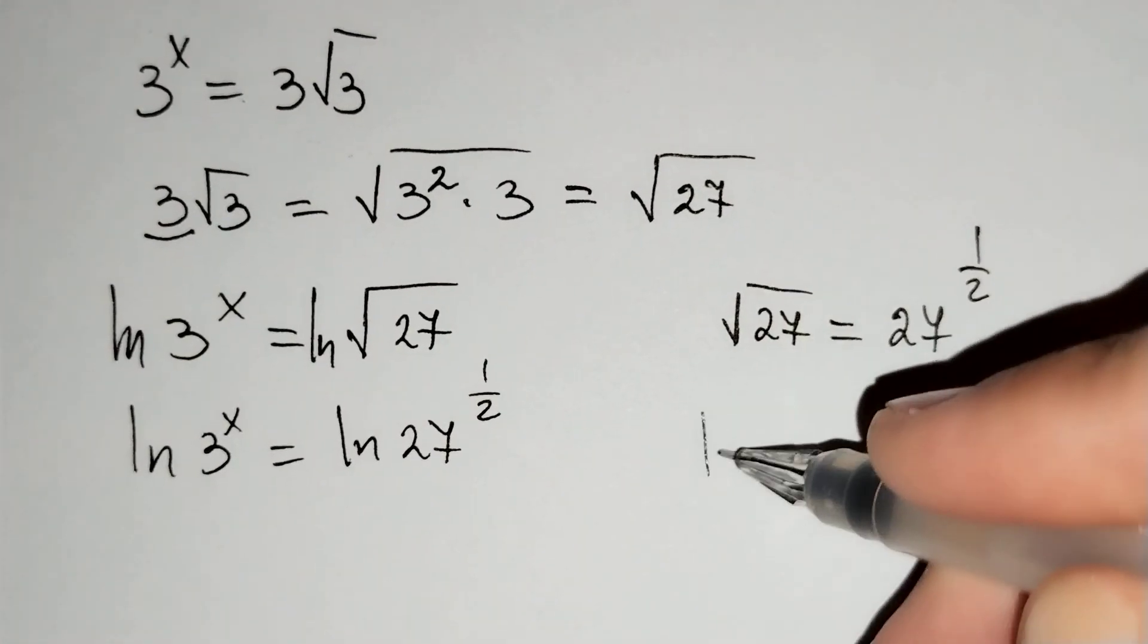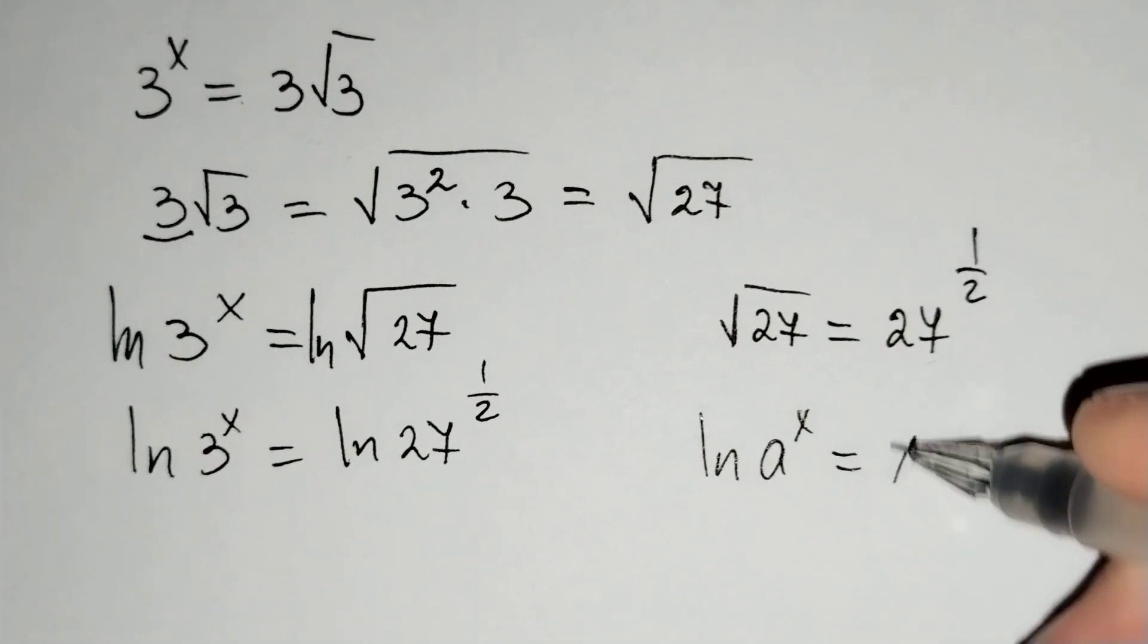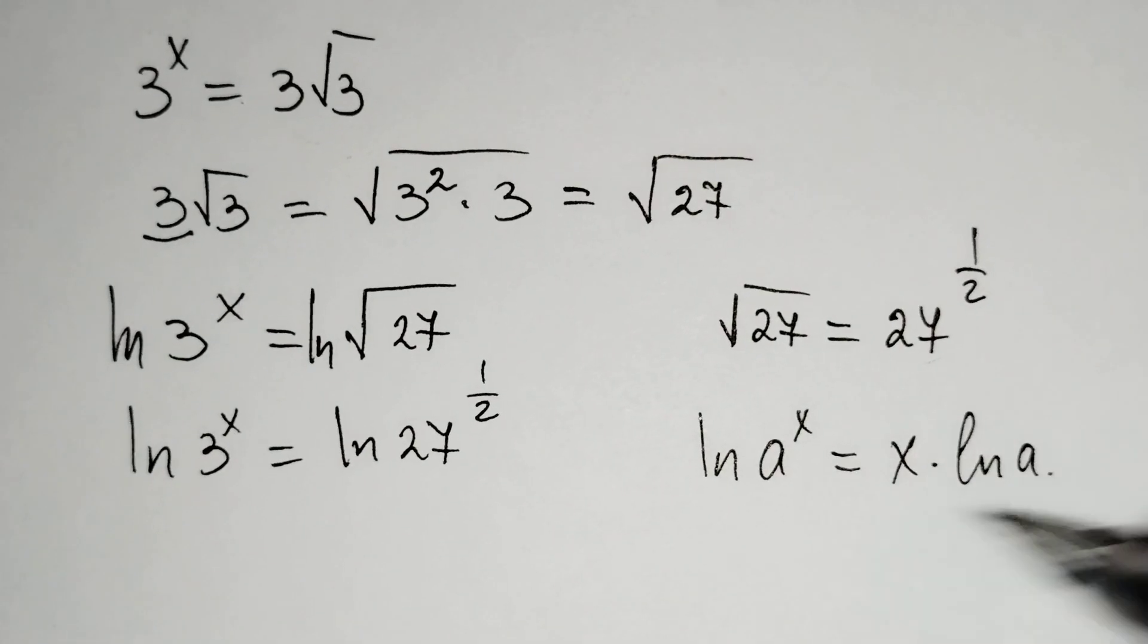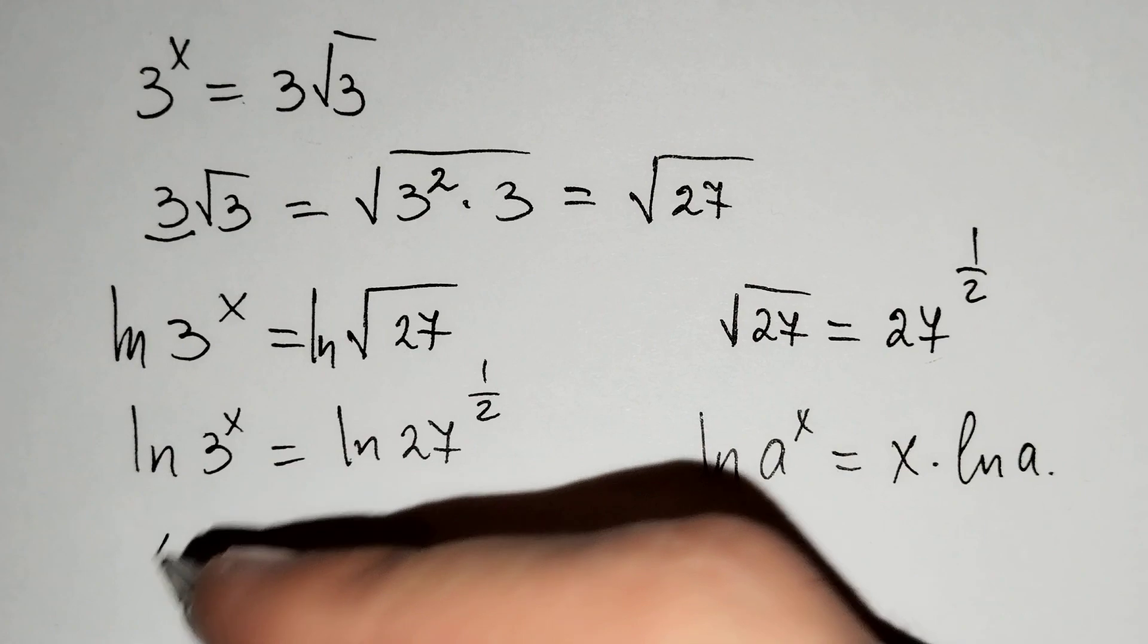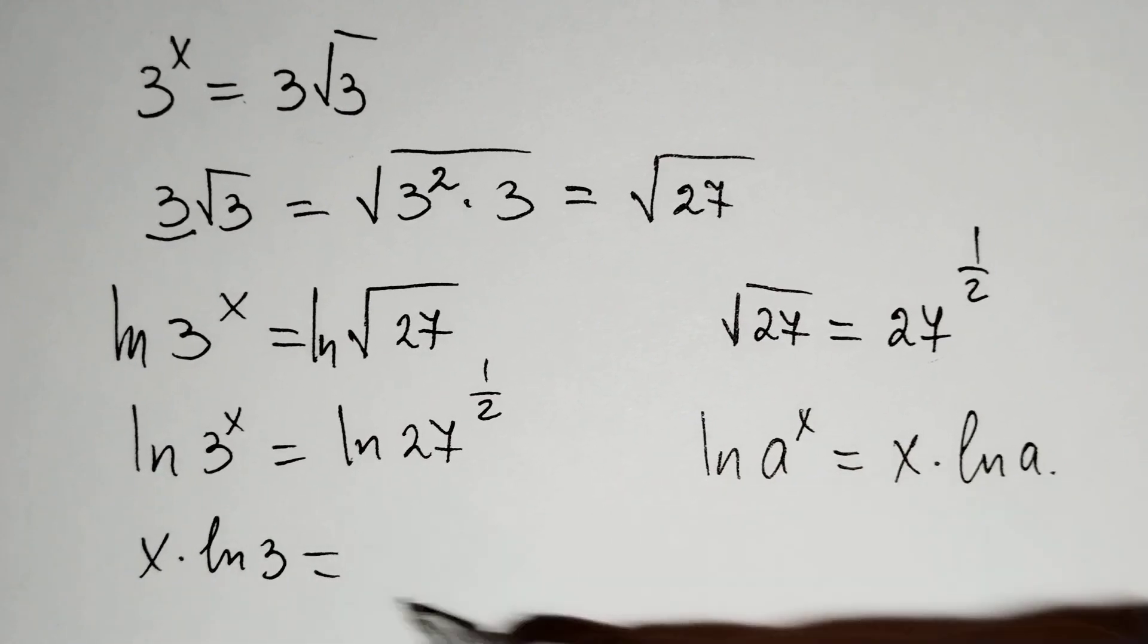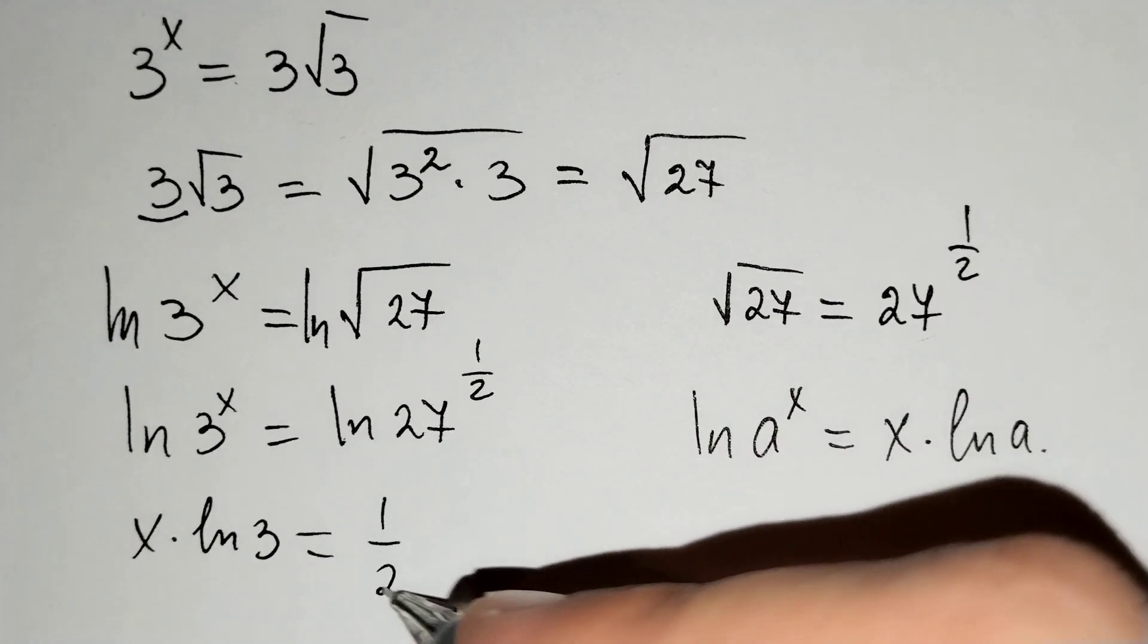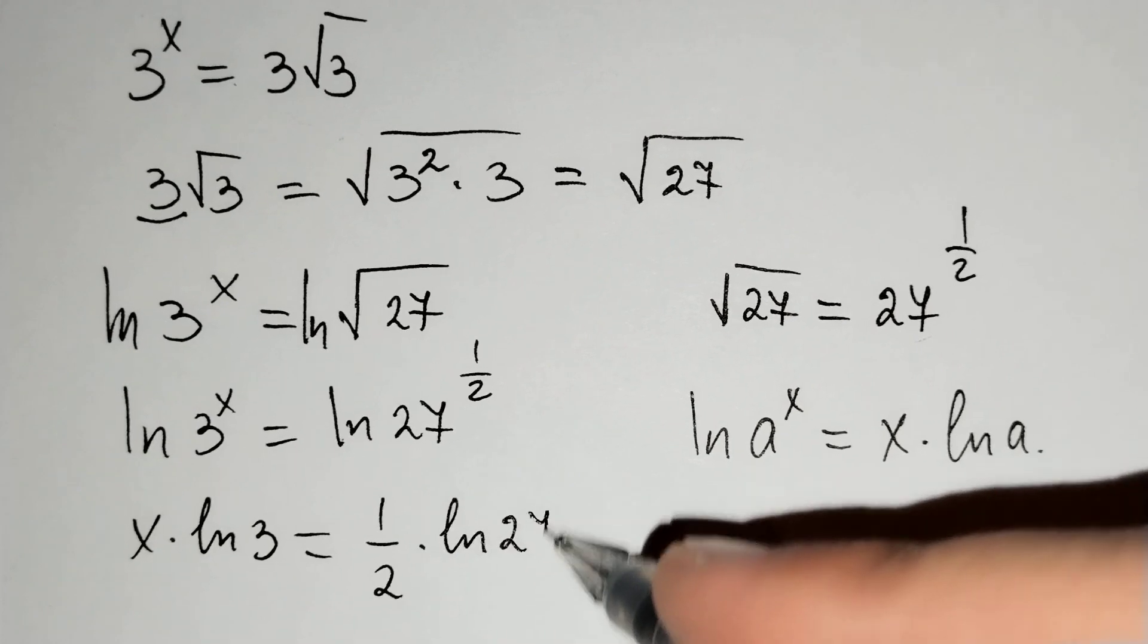Using the formula ln(a^x) equals x times ln(a), we get ln(3^x) equals x times ln(3) equals 1/2 times ln(27).